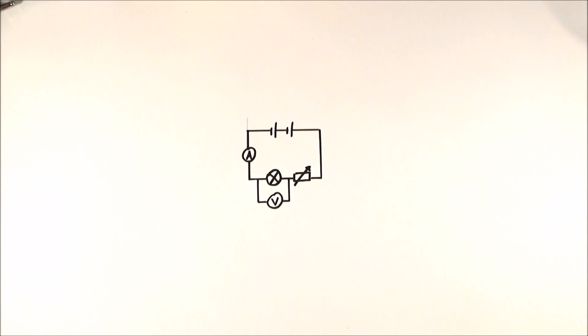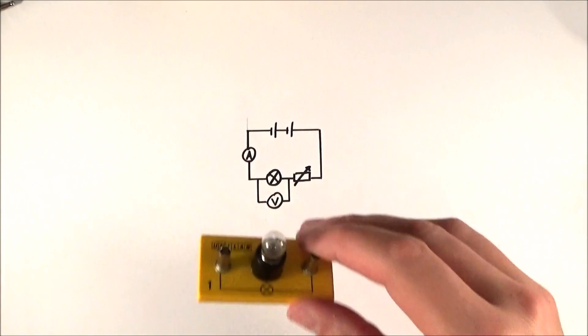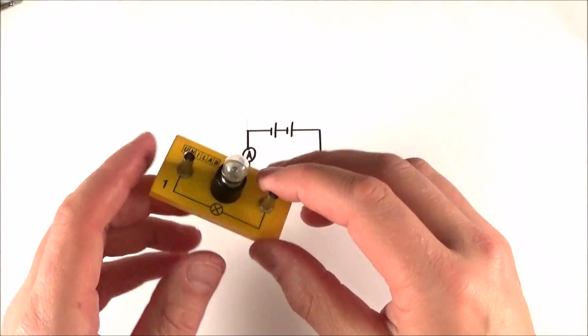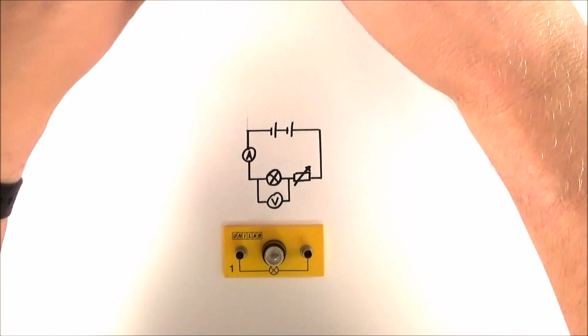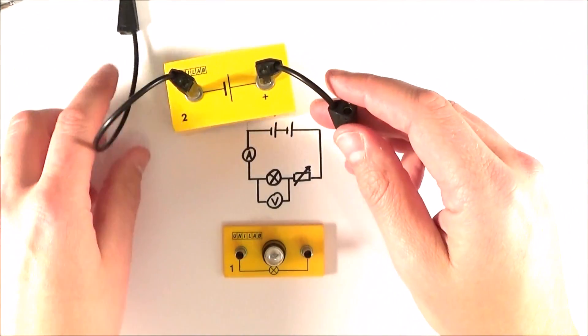So I'd like to show you one way that we can check circuits are working. First of all, I'm going to start with a filament lamp, which I've got in this component holder here. And also, I'm going to start with my source of EMF, which is basically my cell here.